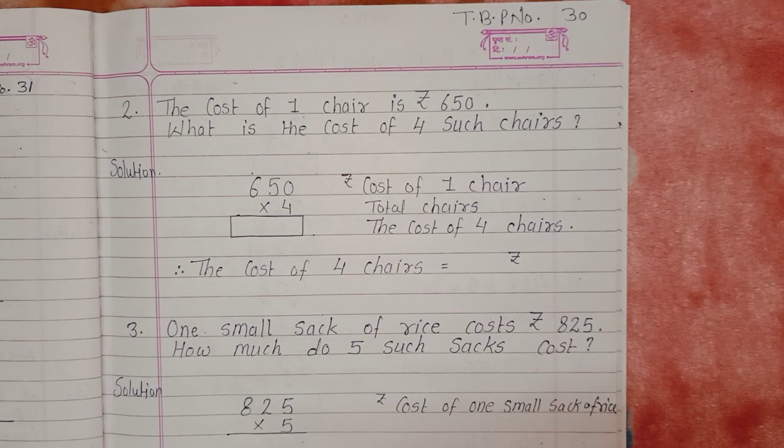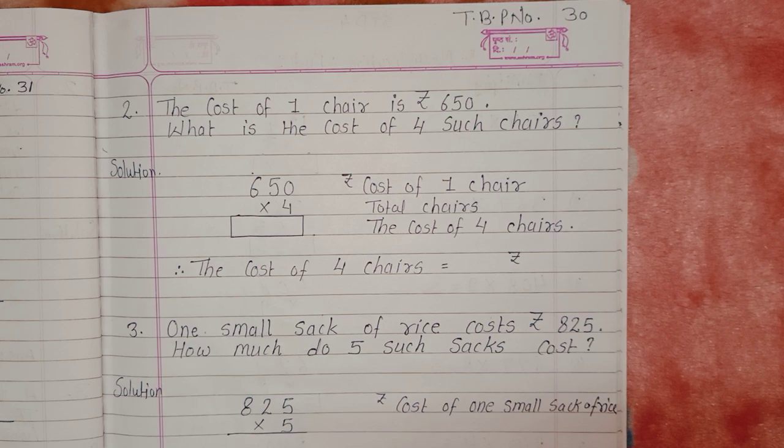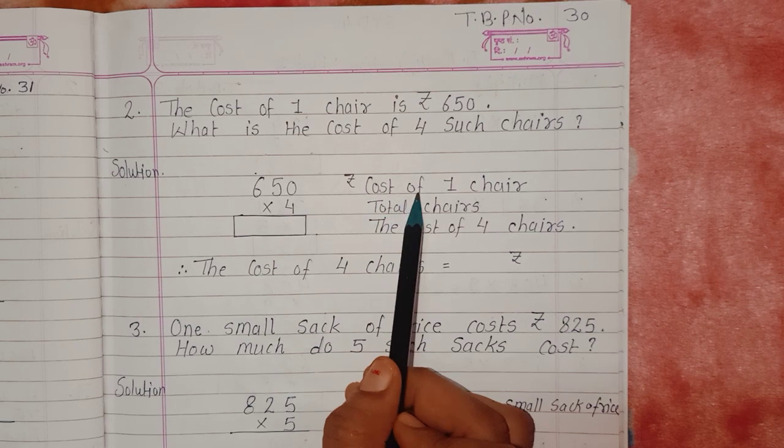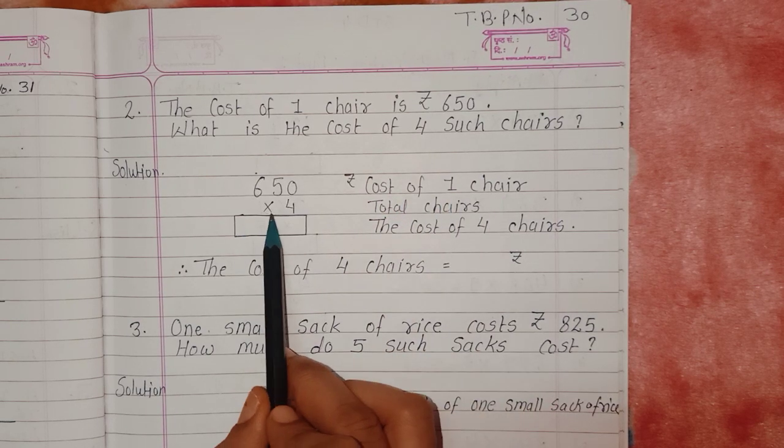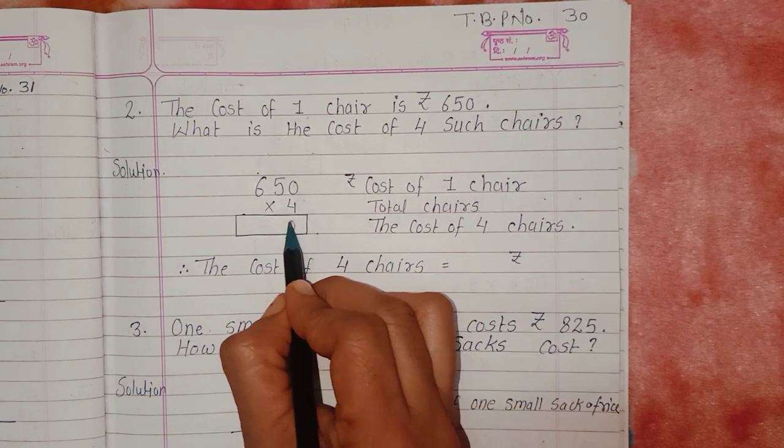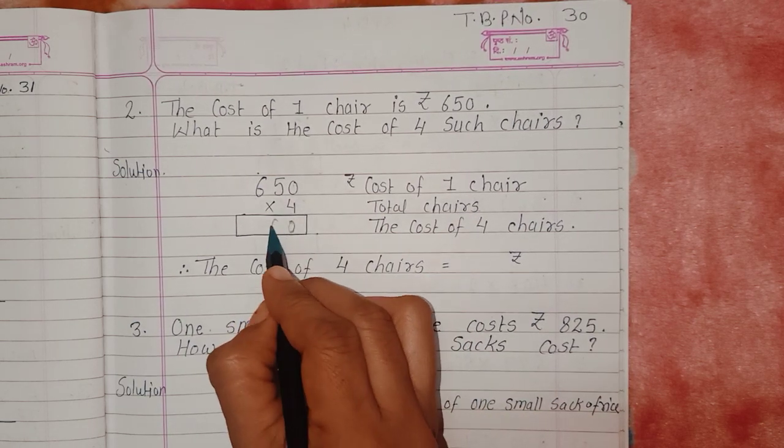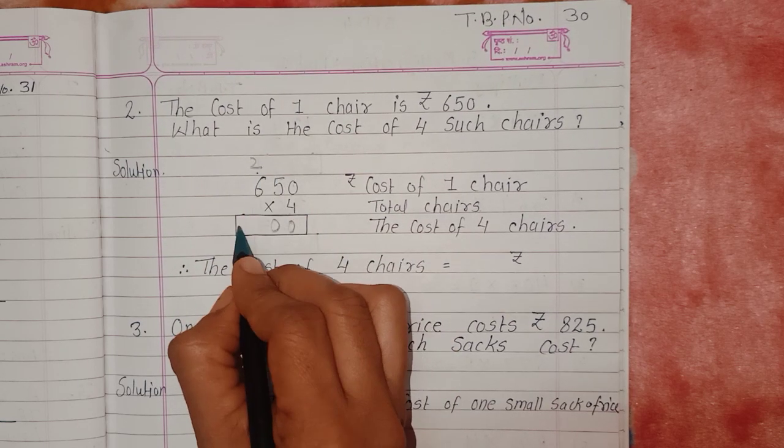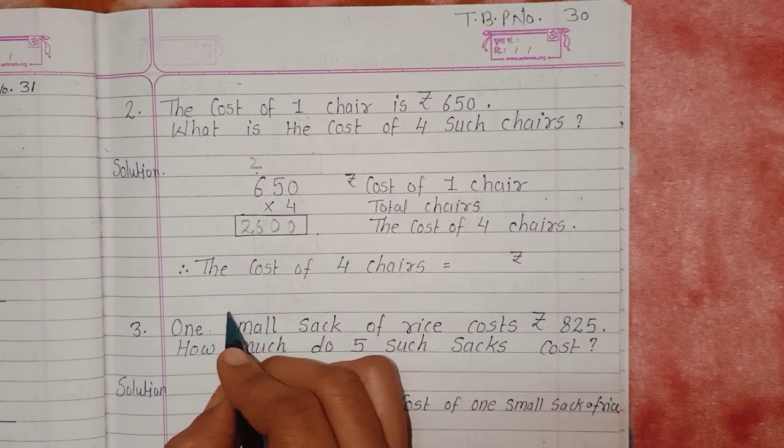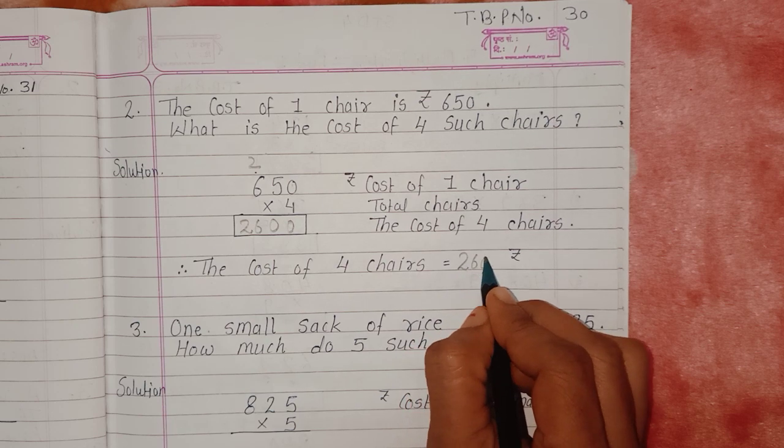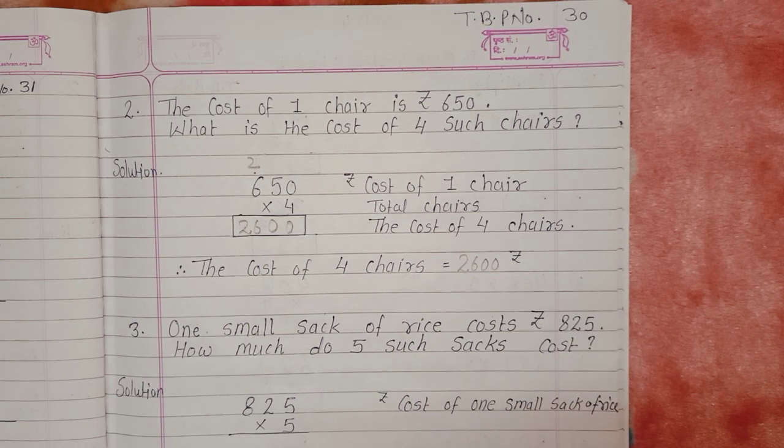The cost of one chair is Rs. 650. What is the cost of 4 such chairs? We will start the solution. 650 rupees is the cost of one chair given in the question, multiplied by 4, the total number of chairs. 4 times 0 is 0. 4 times 5 is 20, 0 here, carry 2. And 4 times 6 is 24, plus 2 is 26. So our answer is: the cost of 4 chairs is 2600 rupees.